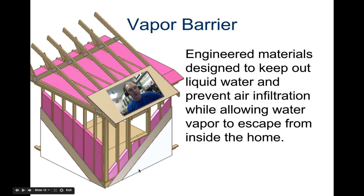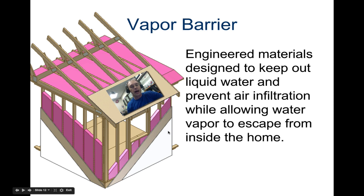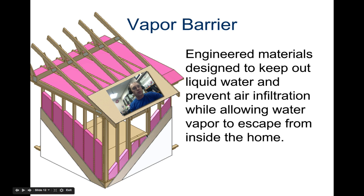Then you have your vapor barrier. It goes on the outside only of the wall sheathing and it's usually a material called Tyvek — people also call it house wrap because it looks like a big white wrapping around the house. Sometimes you'll see it as green. It goes on before the siding and is used to prevent air and water from getting in, while still allowing moisture to wick out.